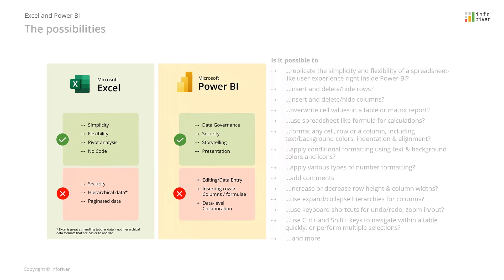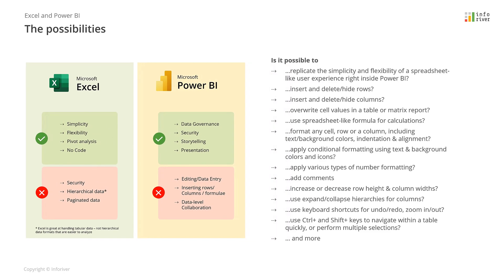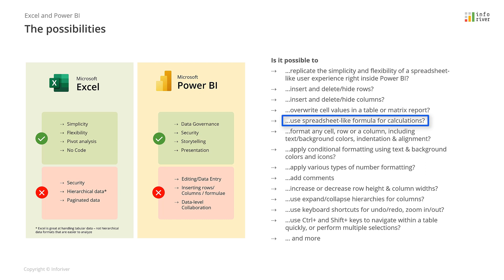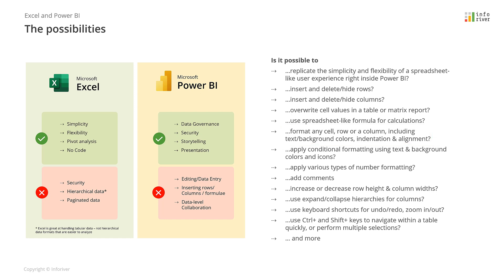As many users continue to use both of these tools for data analysis, several questions are unavoidable. For example, can I insert rows or columns in a Power BI table or matrix report as I can do in Excel? Or can I edit or override a value in a Power BI report as I can do in spreadsheets? How about inserting a formula with cell references, or the ability to group rows or columns as you do with spreadsheets? And more.